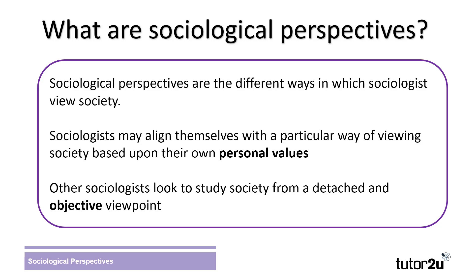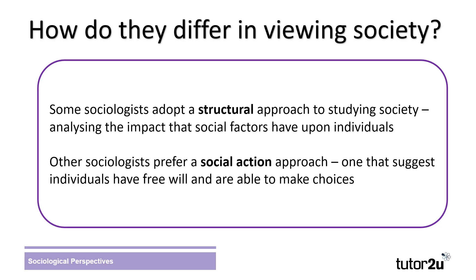There are different types of sociological perspective that sociologists will broadly identify with. How do these differ in viewing society? There are two broad categories that traditional sociological theories fall into. Some sociologists will adopt a structural approach to studying society. These sociologists believe that society shapes the individual and their behaviour, and they focus on the impact that social factors have upon individuals.